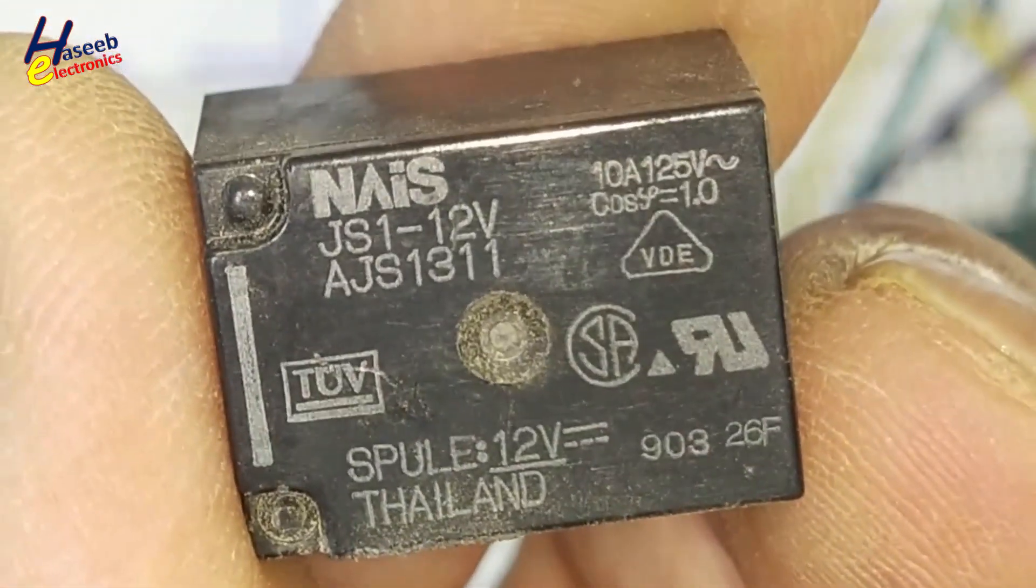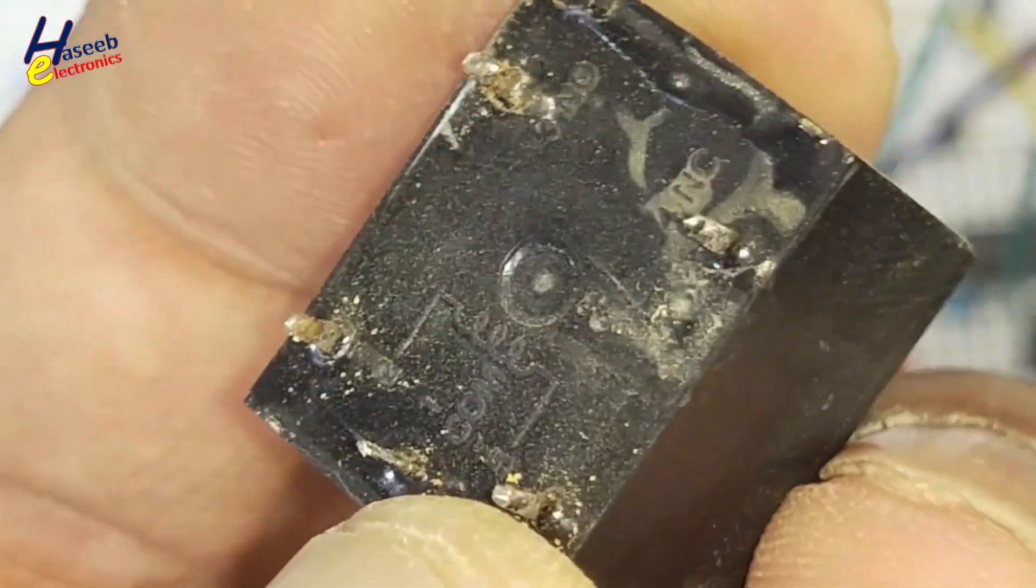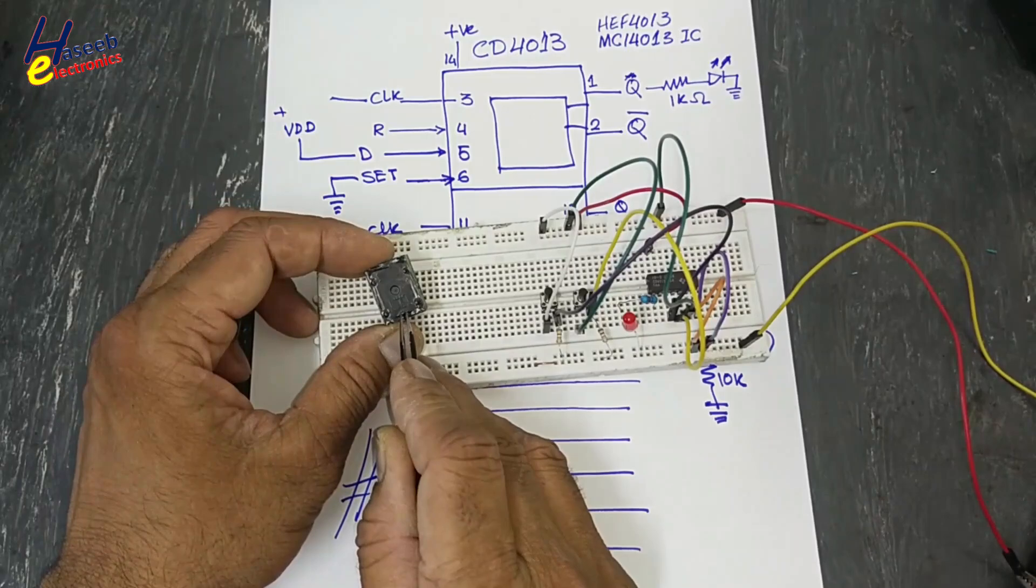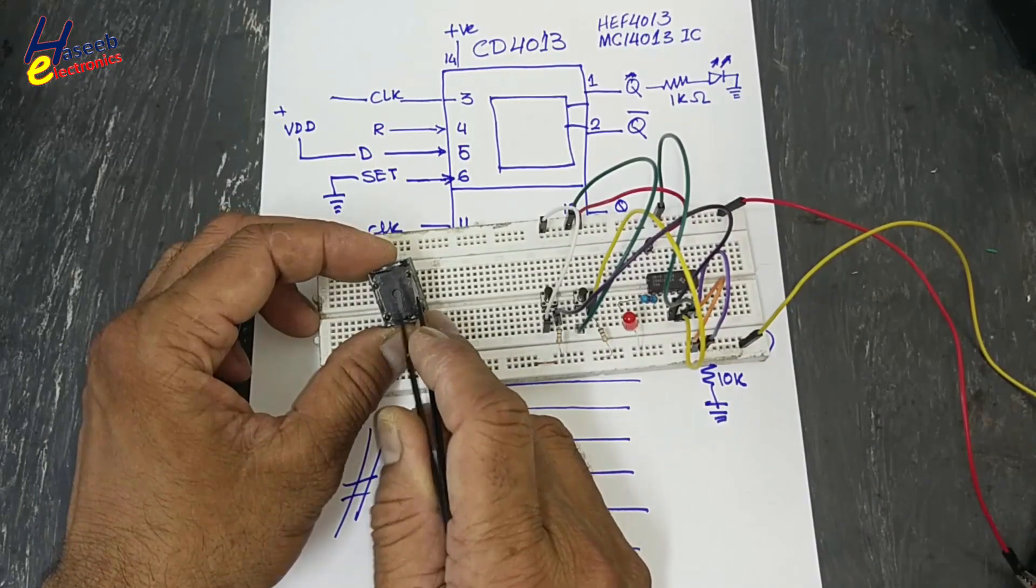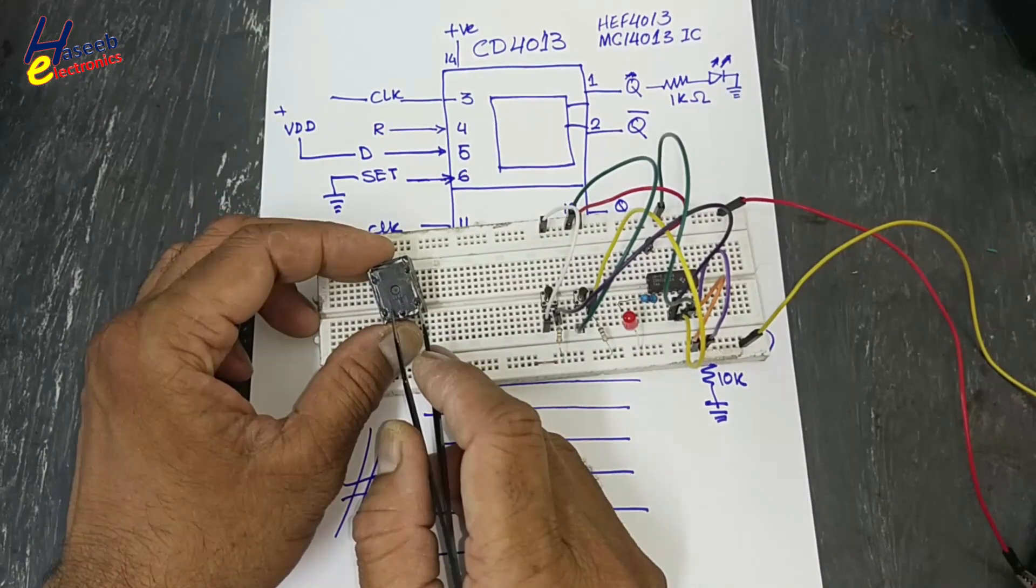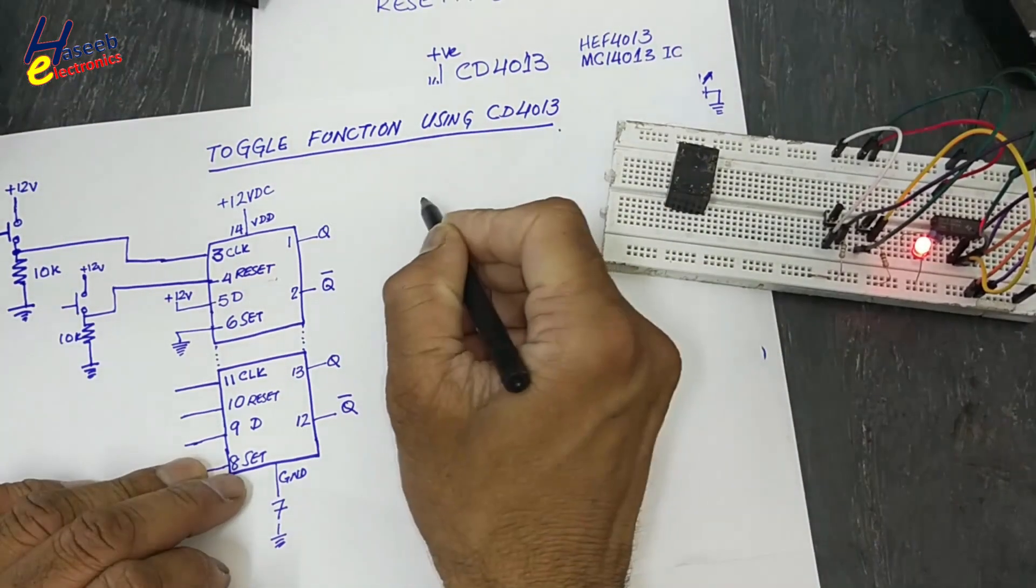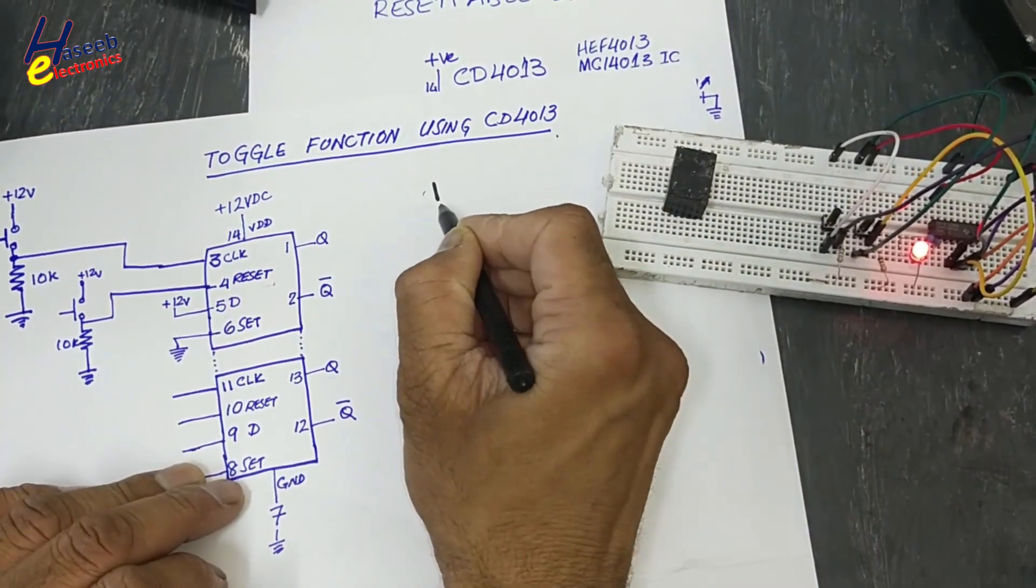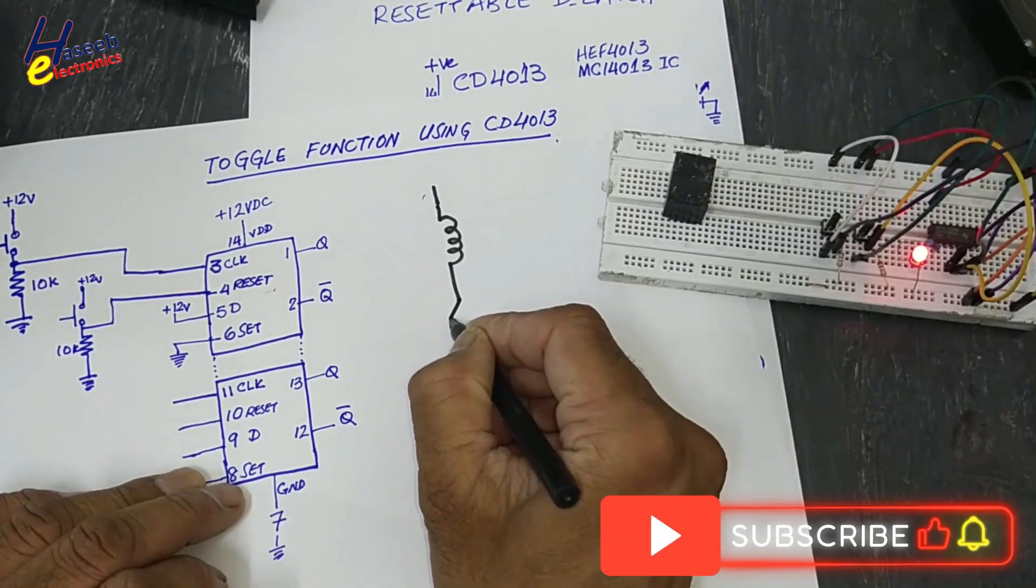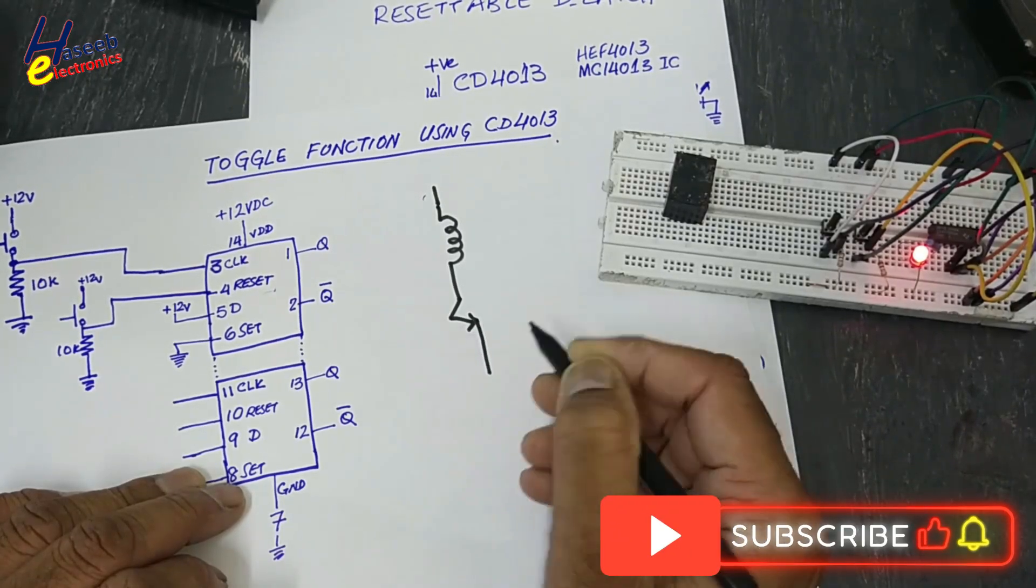GS1-12, it is a single pole double throw relay. Common point, these are two output points NC and NO, and these are winding points. We will use a relay here and connect a transistor 2SC945.